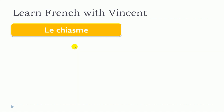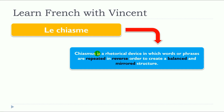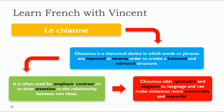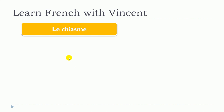This lesson is about le chiasme. Chiasmus is a rhetorical device in which words or phrases are repeated in a reverse order to create a balanced and mirrored structure. It is often used for emphasis, contrast or to draw attention to the relationship between two ideas. Chiasmus adds symmetry and elegance to language and can make sentences more memorable and impactful. We will now see some examples with le chiasme.